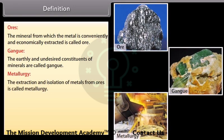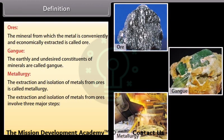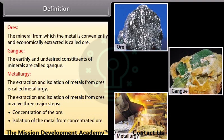Metallurgy: The extraction and isolation of metals from ores is called metallurgy. The extraction and isolation of metals from ores involves three major steps: concentration of the ore, isolation of the metal from concentrated ore, and purification of the metal.